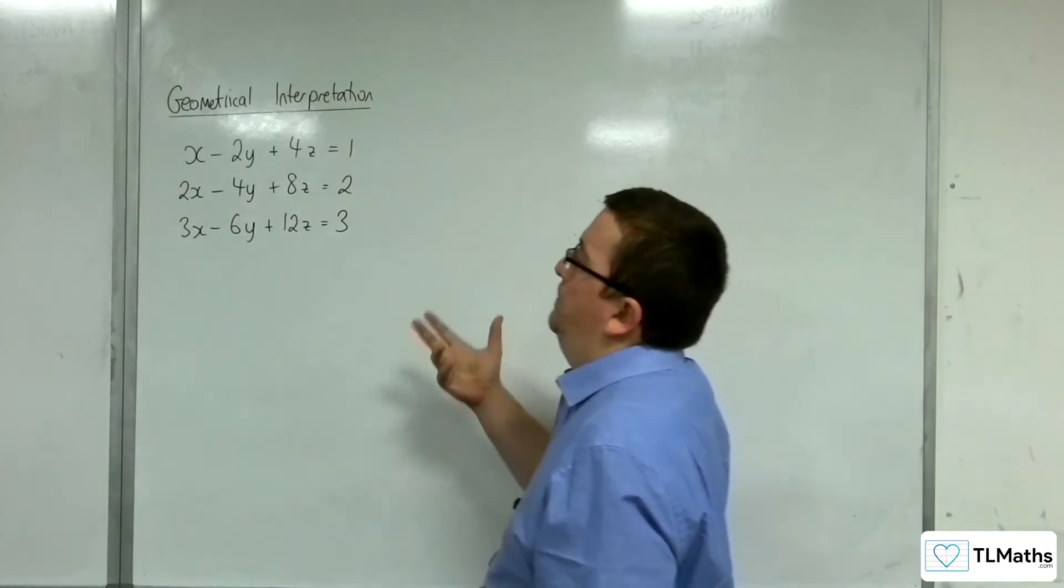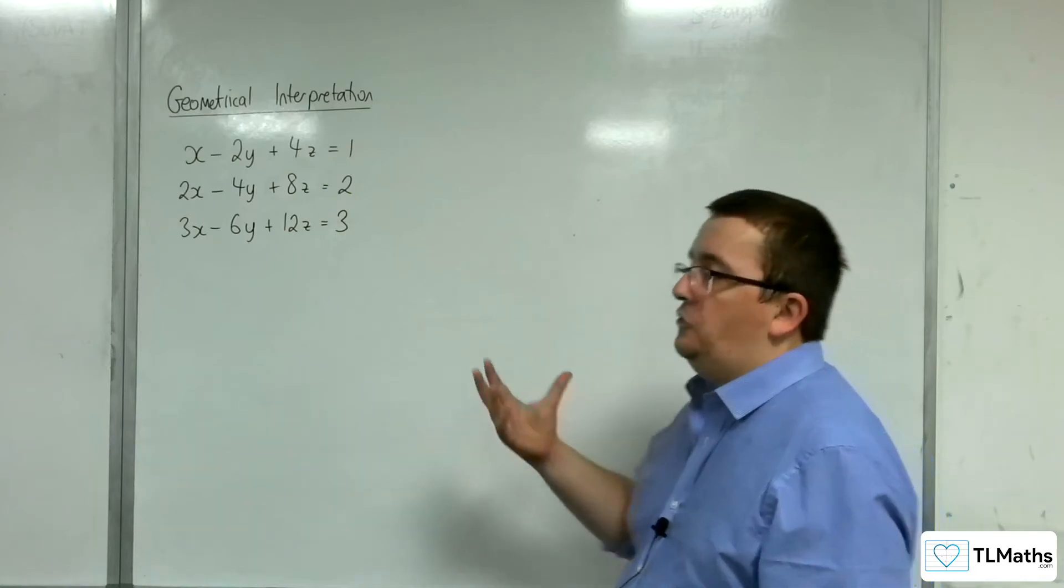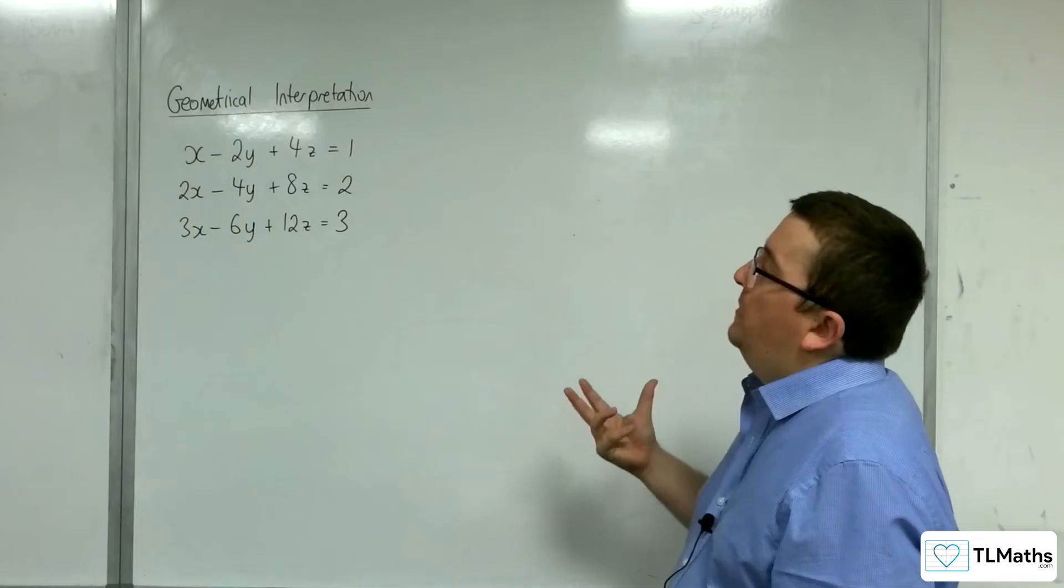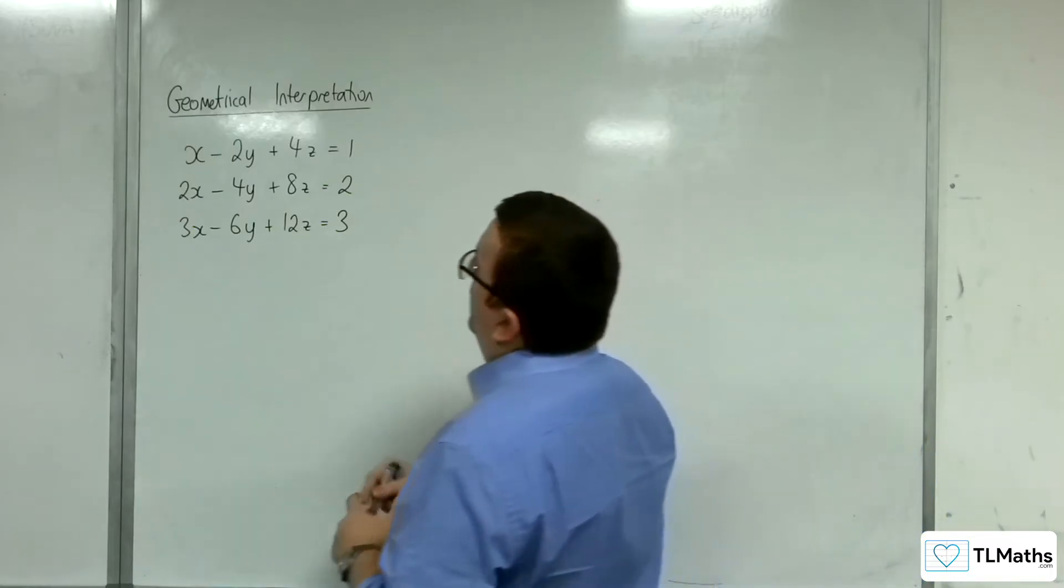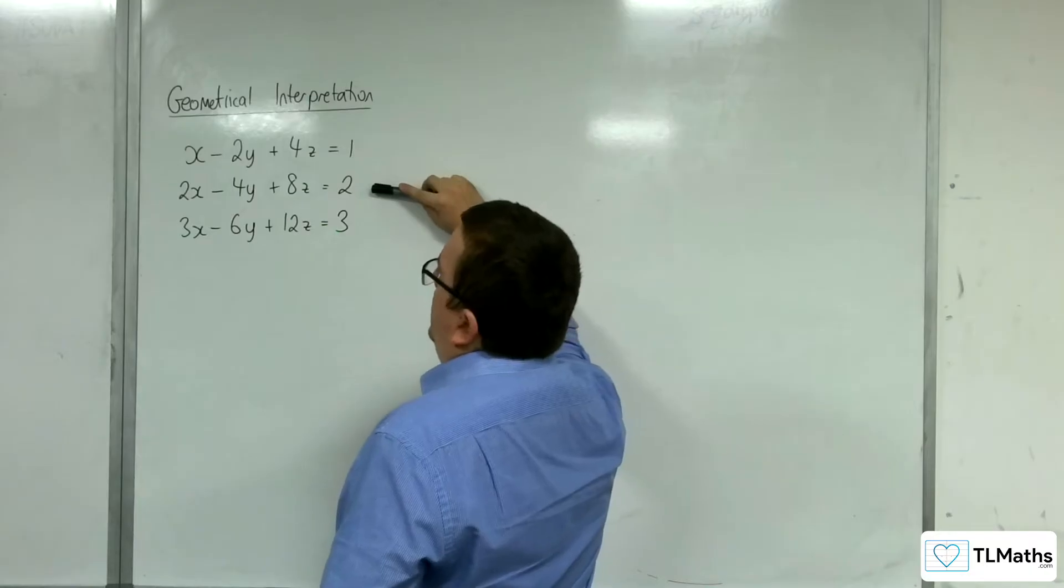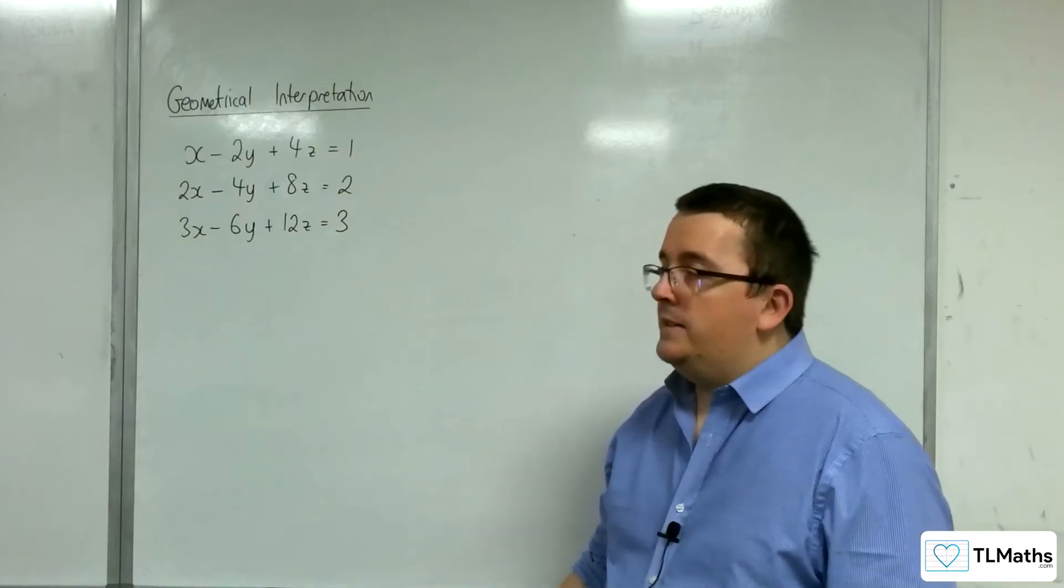With this example, the first thing that you should really do is check whether any of the planes are parallel. Now, if you were to divide this one through by two, then actually you would get precisely that plane. So, we know that the first two planes are actually identical.